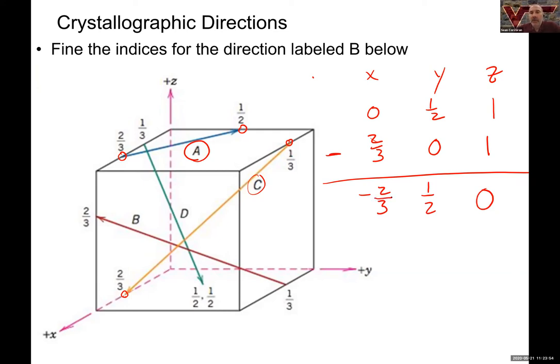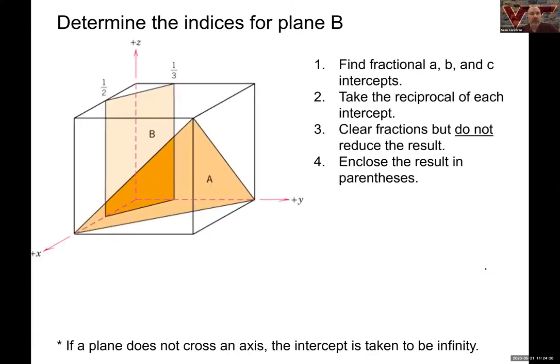I'll go ahead and multiply through now by six. And so I'm going to get minus four three zero and then I'm going to close that in square brackets, put the negative sign over top and no commas. That's a four-bar three zero direction. All right, so let's go ahead. Hopefully you did that well. You'll get some practice.